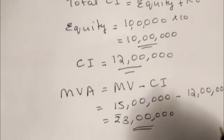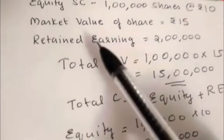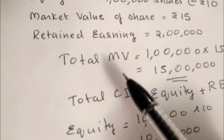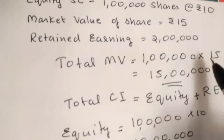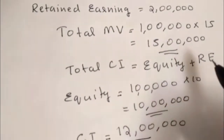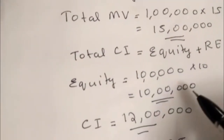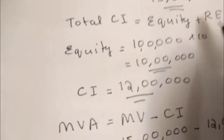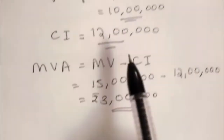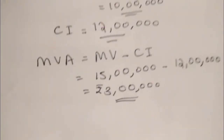To summarize Problem 2: equity is 1 lakh shares at ₹10 each, market value per share is ₹15, and retained earnings are ₹2 lakh. Total market value is 1 lakh × ₹15 = ₹15 lakh. Total capital invested is equity (₹10 lakh) plus retained earnings (₹2 lakh) = ₹12 lakh. MVA equals ₹15 lakh minus ₹12 lakh = ₹3 lakh.